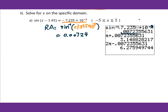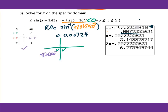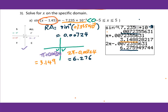Since sin equals negative 7.235 times 10 to the negative 3 power, which is less than 0, according to the diagram we go to the third and fourth quadrant. So we get pi plus 0.00724 for the third quadrant, and for the fourth quadrant we get 2pi minus 0.00724. We put it into the calculator — you get 3.149 for the third quadrant and 6.276 for the fourth quadrant. Then we check that the angle is x minus 1.45.